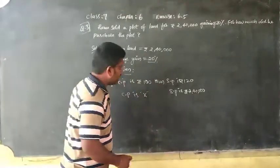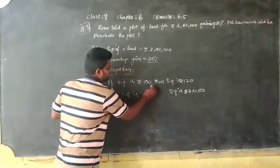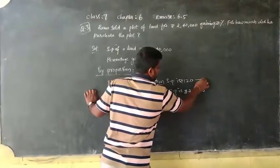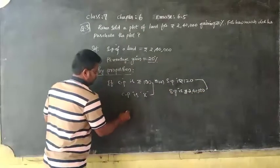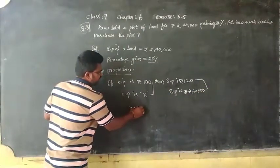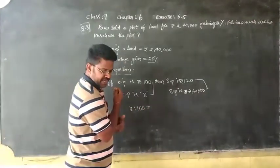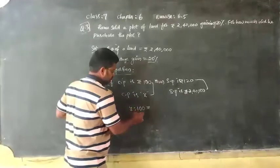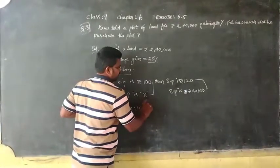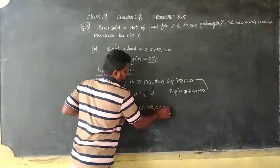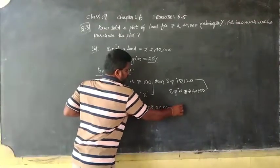So this can be written as: X is to 100, that equals to 2,40,000 is to 120. You know what is the proportional law?